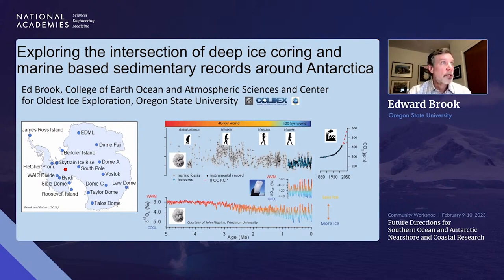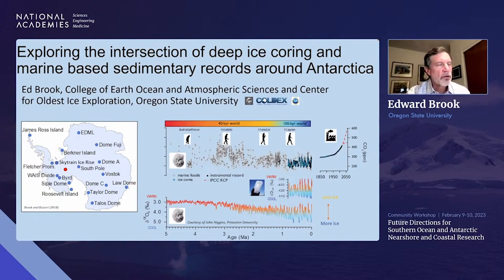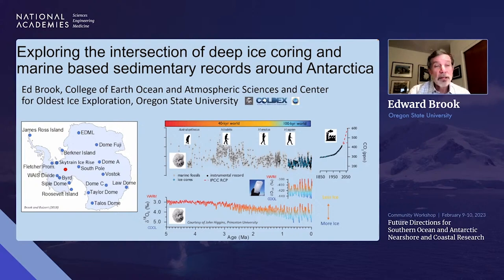There are two big directions in the ice core community right now. One is trying to understand the history of WAIS collapse during the last interglacial period — which tells us about the sensitivity of WAIS to future warming. Projects directed at this include the Sky Train Ice Rise core recently completed by the British Antarctic Survey, and the Hercules Dome project planned by the United States, looking in regions around WAIS for evidence of collapse. If it did collapse, we'll see an indirect record.